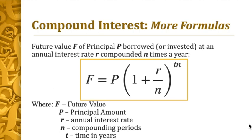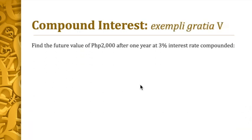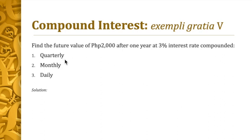Let's move on to example number five. Find the future value of 2,000 pesos after a year at a 3% interest rate compounded quarterly, monthly, and daily. For quarterly, change n to four; for monthly, change n to 12; for daily, change n to 365. You may use your calculators. Kindly pause the video now to answer.